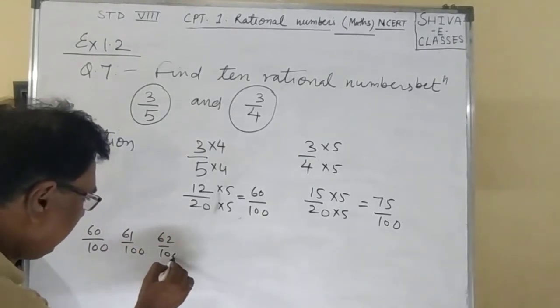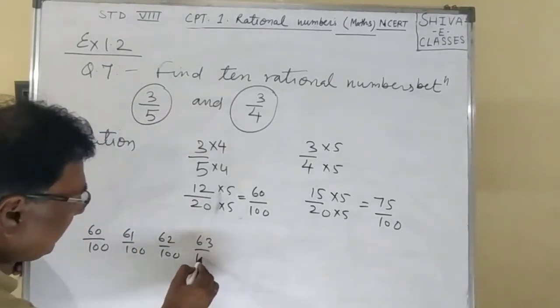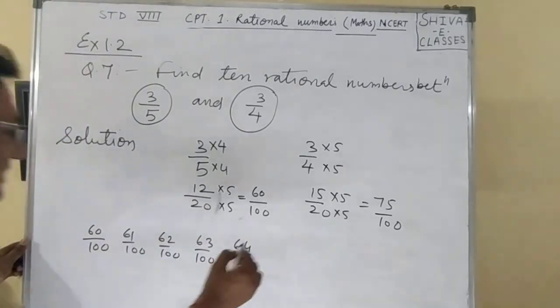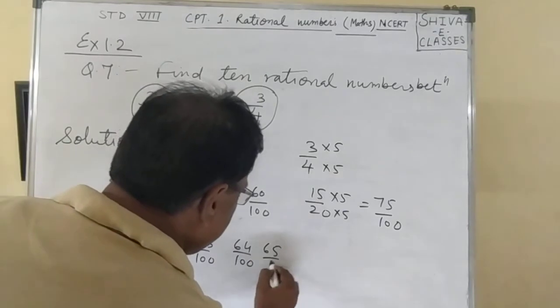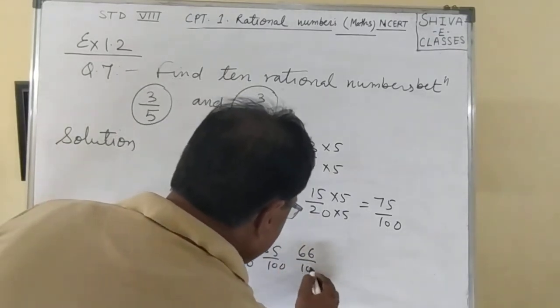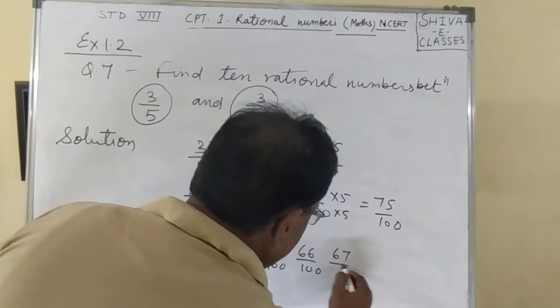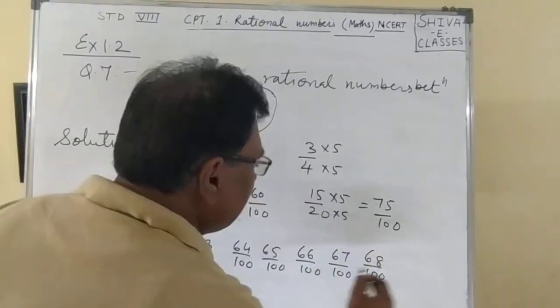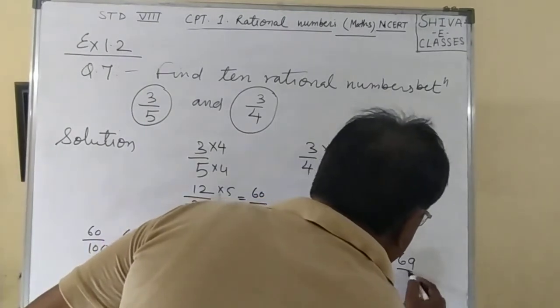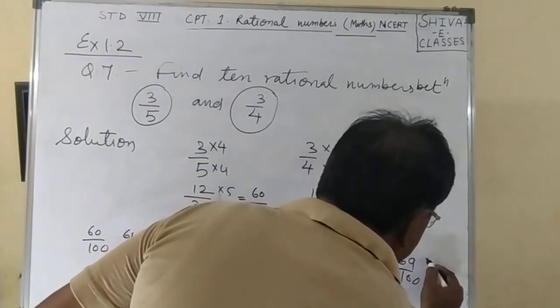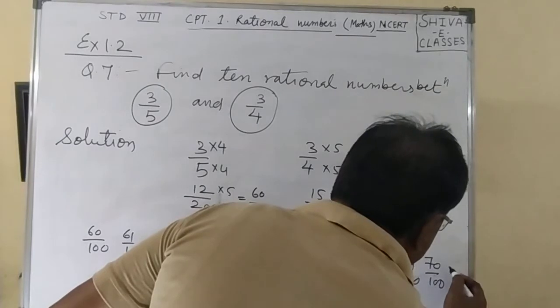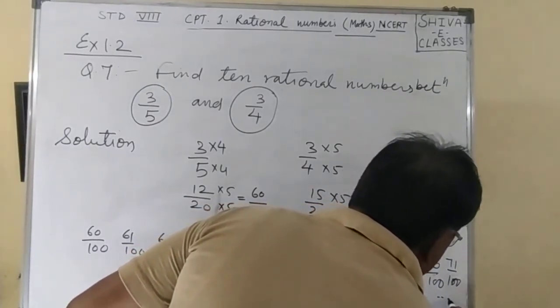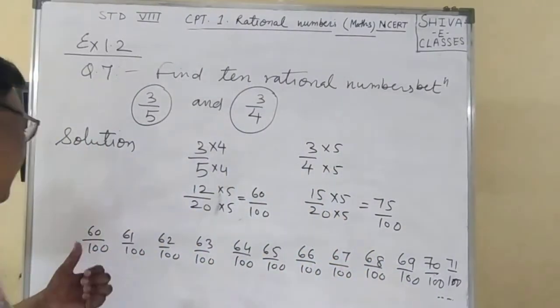Now between 60 and 75, we have 61 by 100, 62 by 100, 63 by 100, 64 by 100, 65 by 100, 66 by 100, 67 by 100, 68 by 100, 69 by 100, 70 by 100, 71 by 100, and so on.